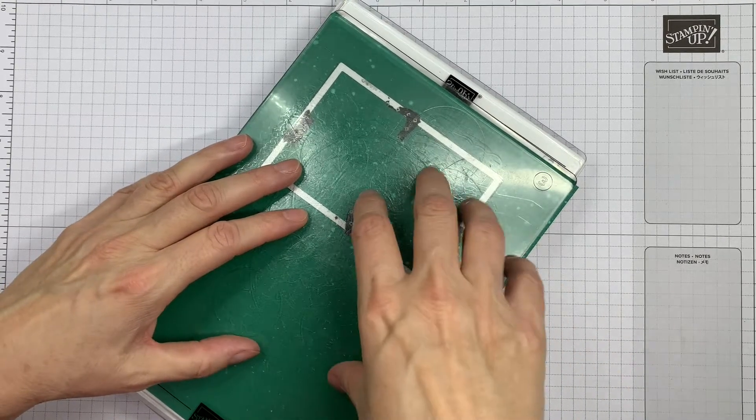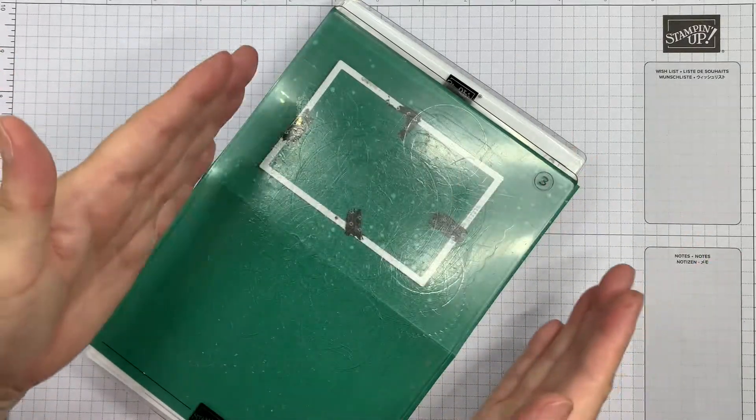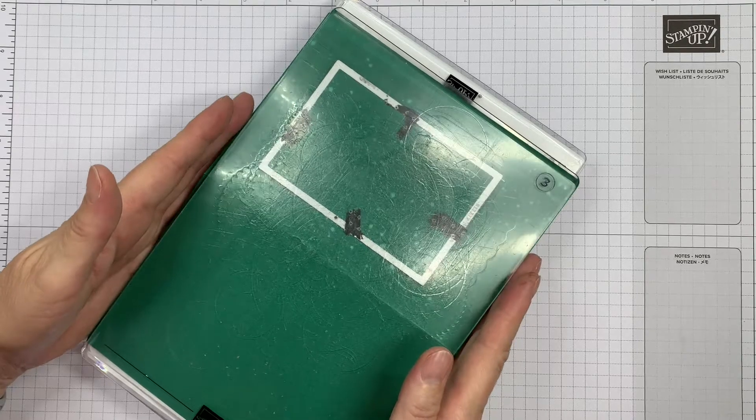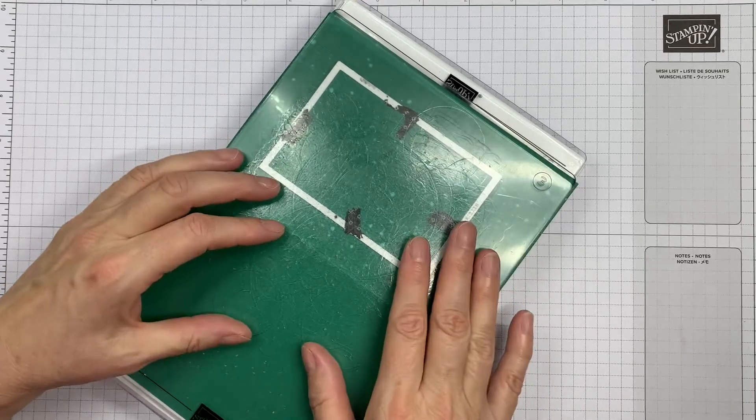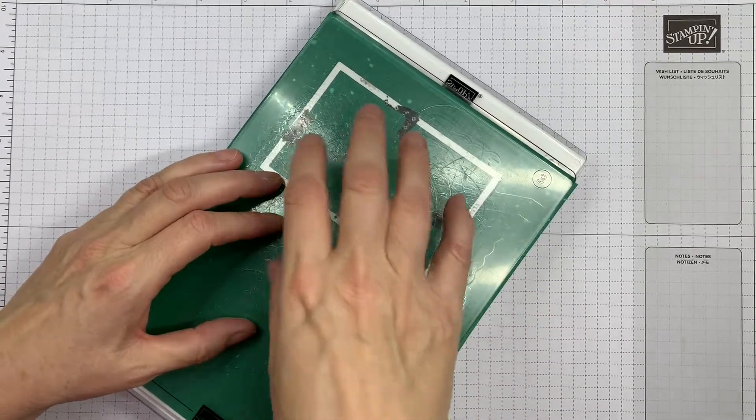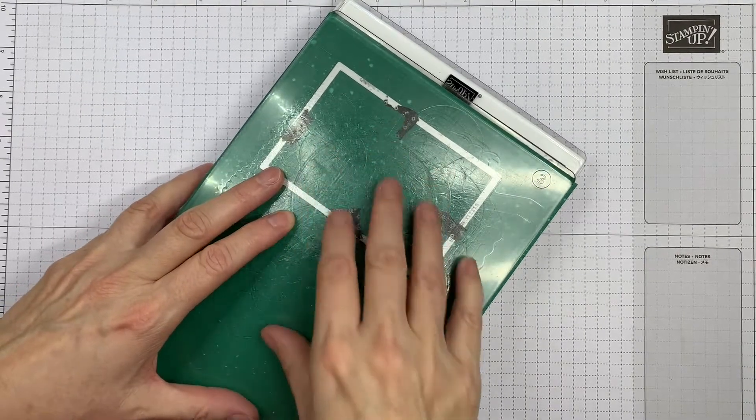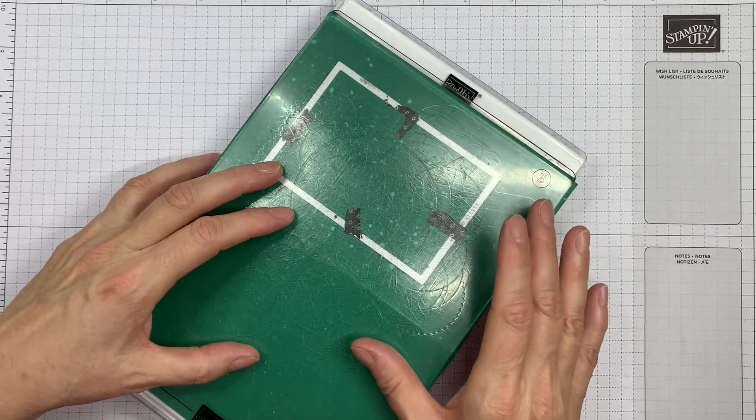You won't be able to do this with the small one because the card won't go through. It just goes through this way with this version, but you do need to make sure that you are very central when you're rolling it through, so make sure everything is nicely lined up.